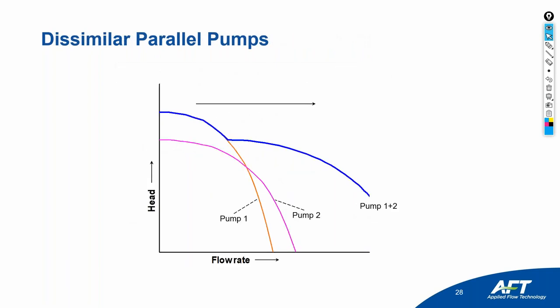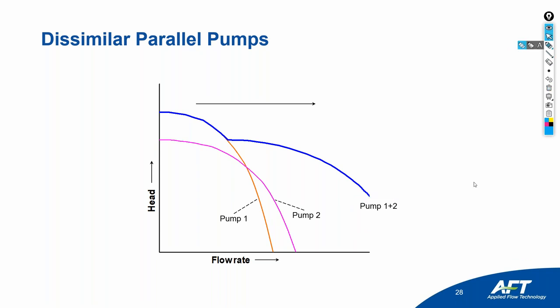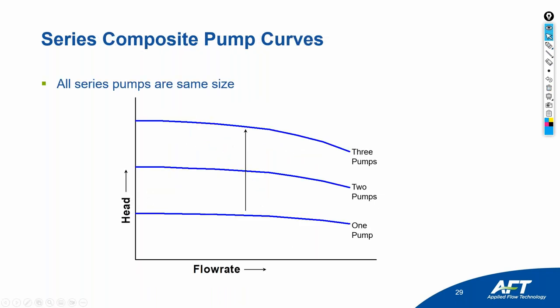If you have dissimilar pumps with different pump curves operating in parallel, Fathom accounts for how they add together, producing an odd-shaped composite system curve. When pumps are in series and the same size, head simply adds.